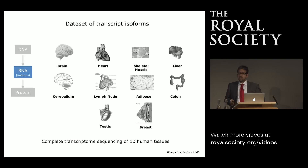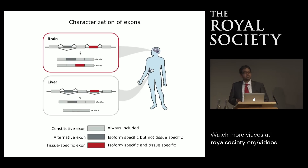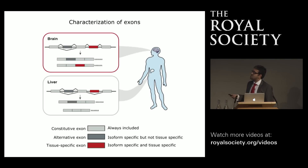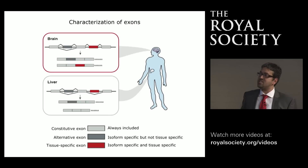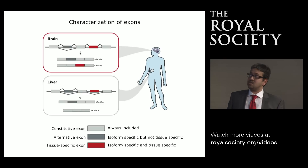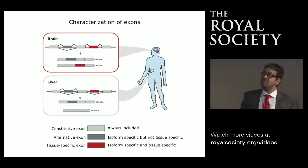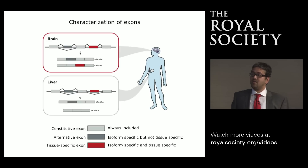To address how tissue-specific isoforms affect protein function, we systematically compiled large-scale datasets describing transcript isoforms from 10 different human tissues. We then characterized exons into three categories using a toy example of a gene with five exons. Constitutive exons are always included in all isoforms regardless of tissue. Alternative exons are included in one isoform but not another, but without tissue specificity—they appear in both brain and liver. Tissue-specific exons are isoform-specific and also specific to a particular tissue—included in one isoform in brain but not in liver, and not seen at all in liver tissue.